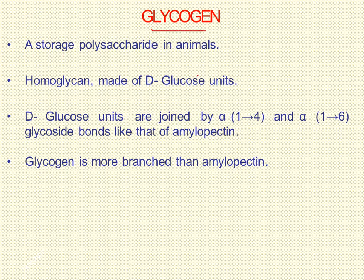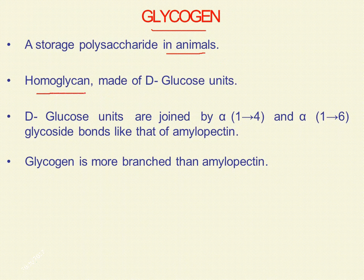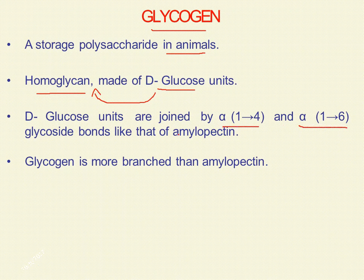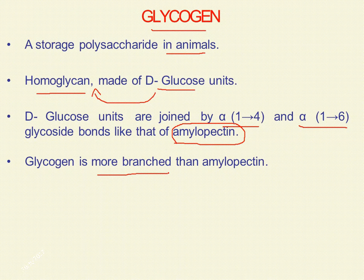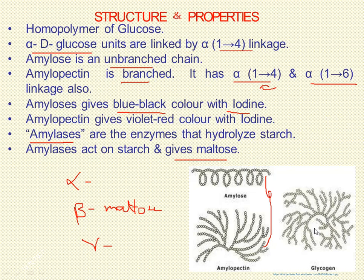Glycogen is also a storage polysaccharide, but found in animals — stored mainly in two organs: the liver and muscle. It is a homoglycan because it is made of only one type of sugar, D-glucose. Thousands of D-glucose units are joined by alpha-1,4 linkages and alpha-1,6 linkages. It is similar to amylopectin in structure but shows more vigorous branching than amylopectin.